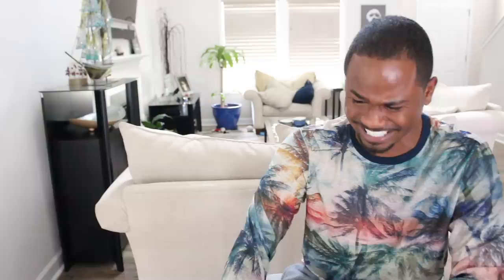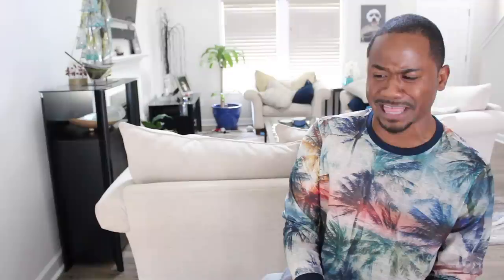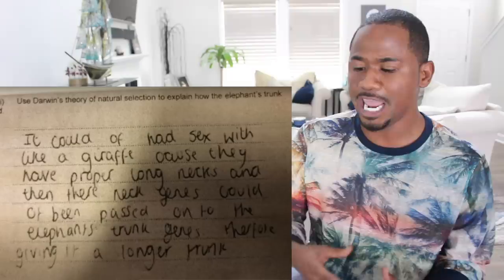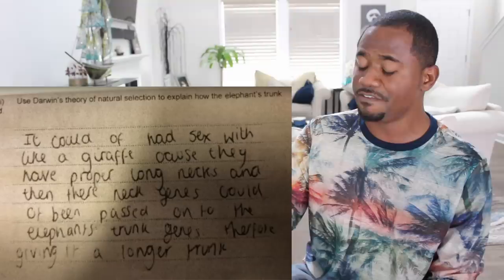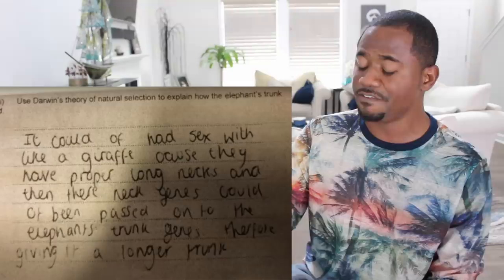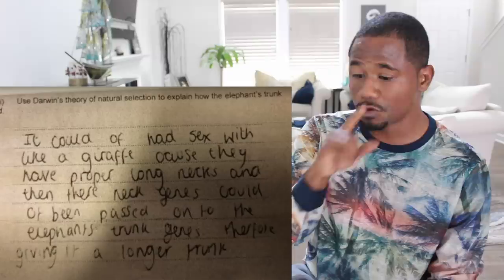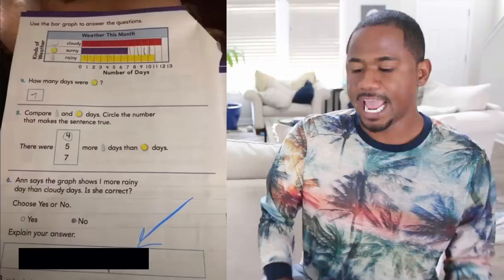Use Darwin's theory of natural selection to explain how the elephant's trunk — what? What kind of question is that? Well, this kid wrote: 'The elephant could have had sex with a giraffe because they have proper long necks and then their neck genes could have been passed on to the elephant's trunk genes, therefore giving it a longer trunk.' If I don't see a check mark anywhere near this I'm about to find that teacher myself, because not only is that good penmanship, that actually explains a lot.